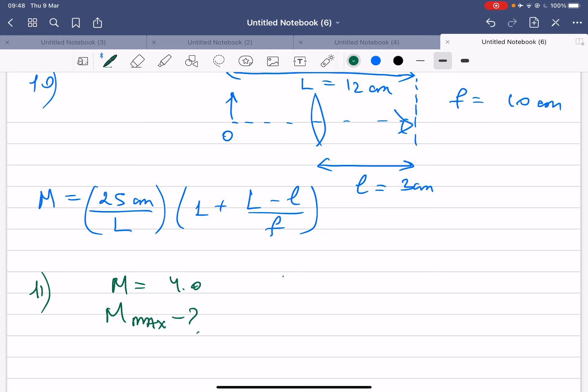So the formula of the maximum magnification is defined by D over focal length plus 1. D is always 25 centimeters, and in general M is equal to D over f.